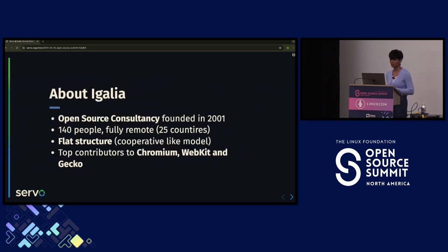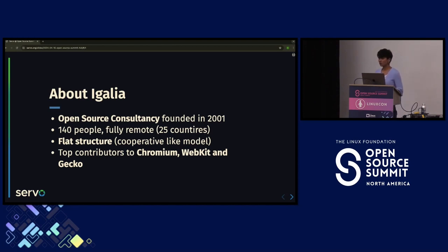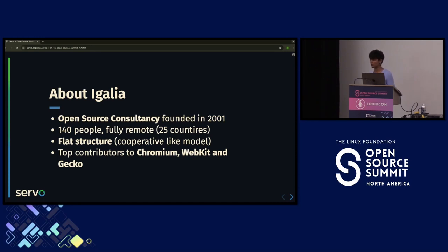In 2023, Servo was restarted at Igalia. Igalia is an open source consultancy founded in 2001, with 140-plus people working fully remote across close to 25 countries, with a flat, cooperative-like model. They are top contributors in Chromium, WebKit, and Gecko — which is very important because they had people with decades of experience working on rendering engines and browsers, making them a great fit to restart the Servo project.